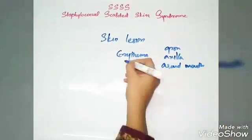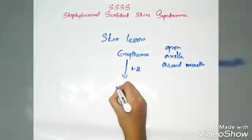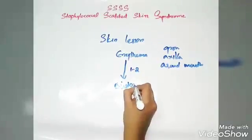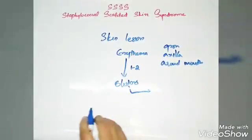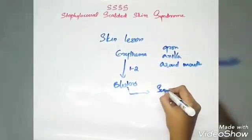After one to two days, it will transform into blisters, then this will transform to superficial erosions, gradually involving large areas.